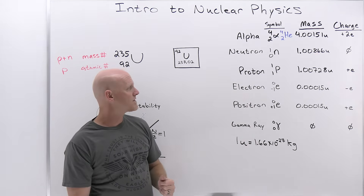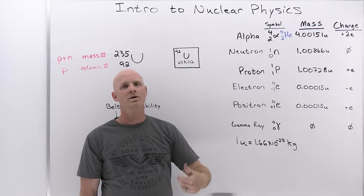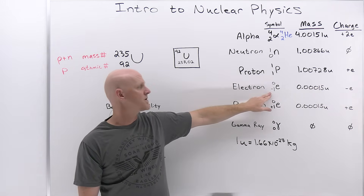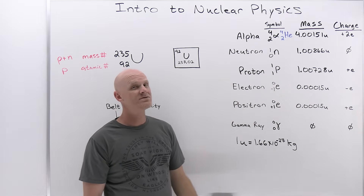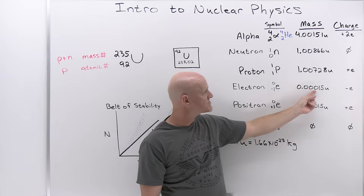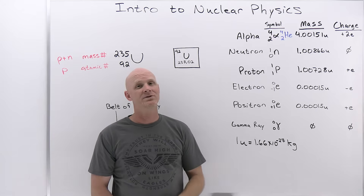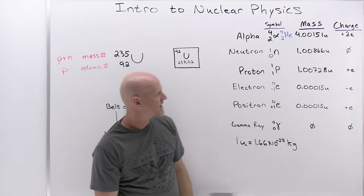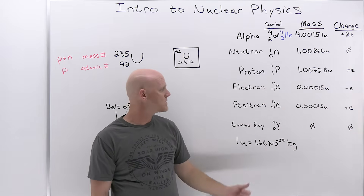The electron has a mass number of zero — though its actual mass is 0.00015 unified mass units, which rounds down to zero. The negative one in its nuclear symbol doesn't mean negative one protons; it simply means the charge is negative one. Its charge is −1.6×10⁻¹⁹ Coulombs.